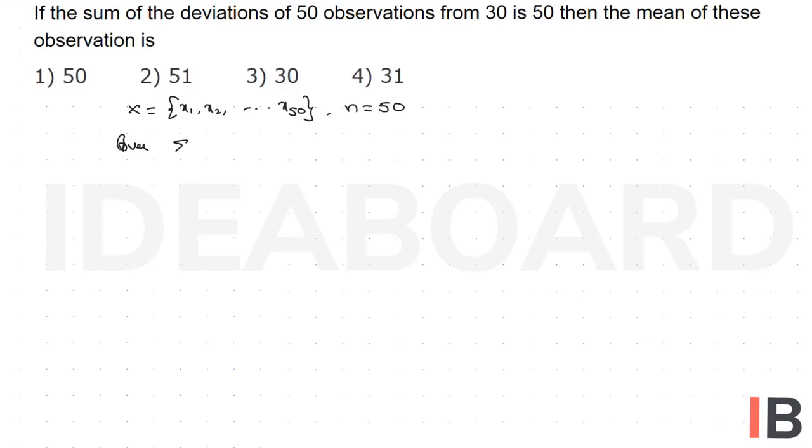When sigma i equals 1 to 50, xi minus 30 equals 50. That implies sigma i equals 1 to 50, xi minus 50 times 30, equals 50.